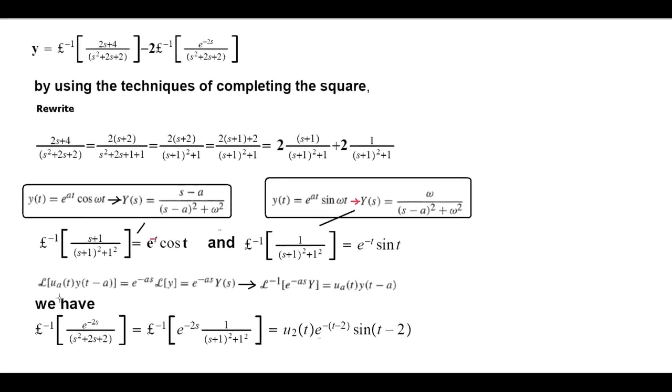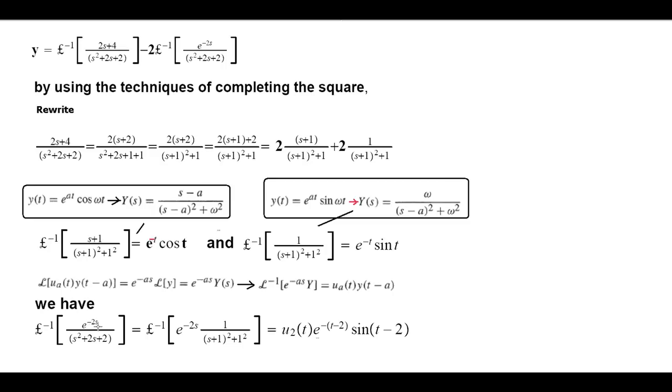And then when we have e^(-2s) as factor, we know that the Laplace transform of this portion is e^(-t)sin(t). Then what we can do is apply this inverse rule to obtain this value with the Heaviside function.